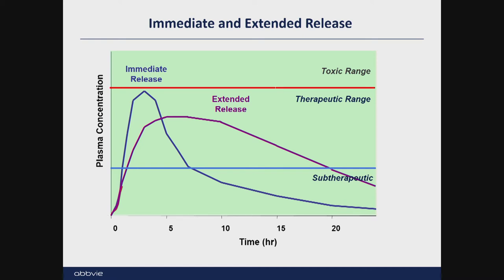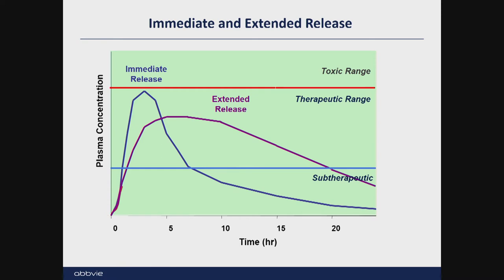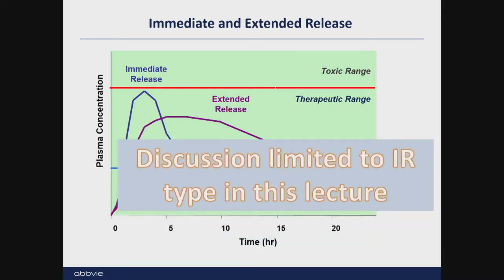There are multiple dosing forms. First, we call it immediate release, indicated by a very fast, high C-max which quickly declines. Another type is extended release, which reaches a high concentration but not the highest — you're controlling concentration in the body by controlling the release rate. In this lecture, we only talk about immediate release, because most enabling technologies can be used for extended release. The majority of work I'm discussing today is within the IR type.